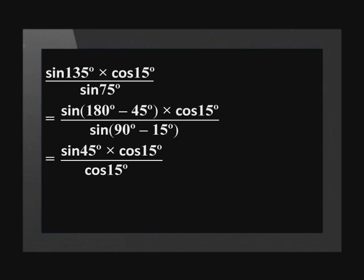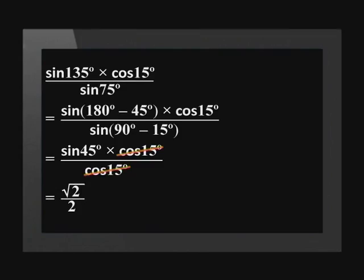Remember to check the CAST diagram when doing this step. Did you notice the cos(15°) in the denominator and the numerator? This means that we can cancel them. We can now replace sine(45°) with its numeric value of √2 over 2.